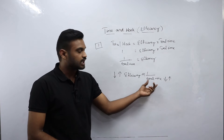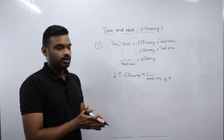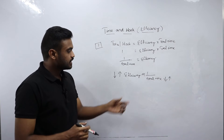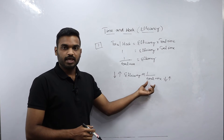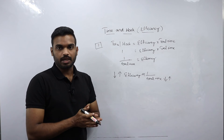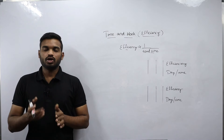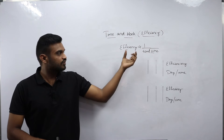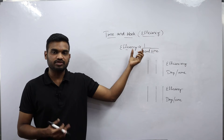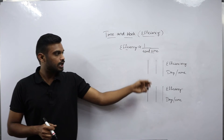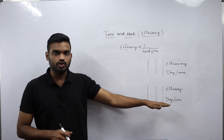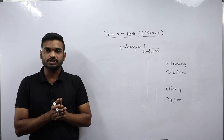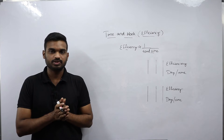Efficiency and total time taken to complete the work are always inversely proportional. I will take two examples so that you can see how to write efficiency and total time, and understand how to use this efficiency concept in solving problems.